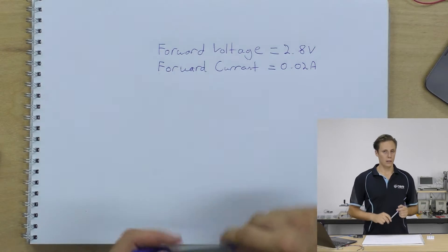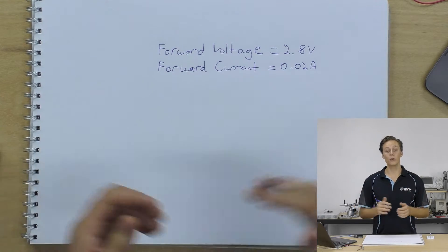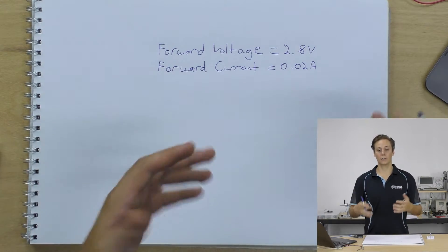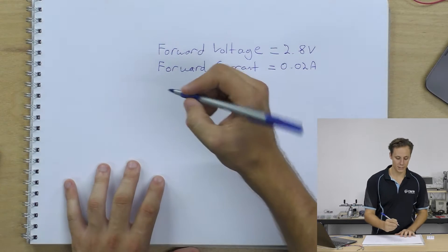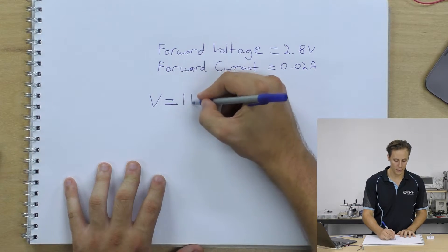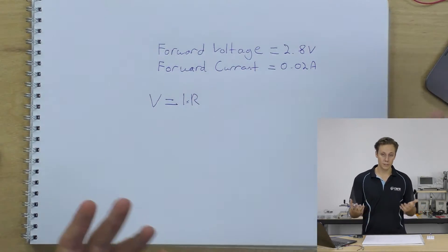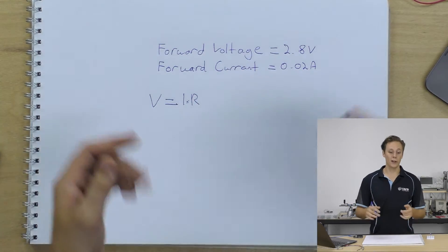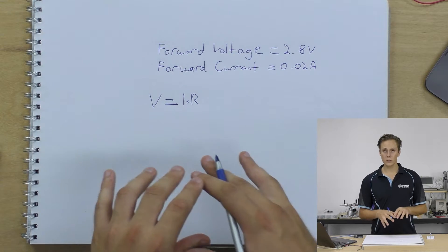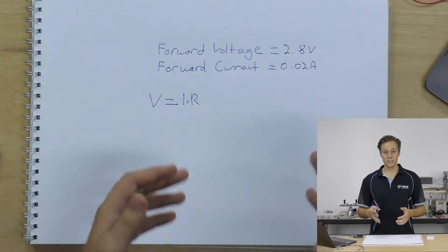If you've checked out our analog electronics crash course, you will know Ohm's Law. Ohm's Law describes the relationship between voltage, current, and resistance, and it's given as V equals I times R, where I is current, R is resistance, and V is volts. We can use this equation to find the resistance required by the resistor.